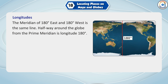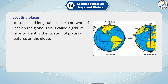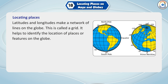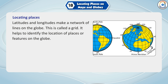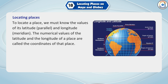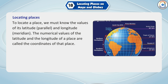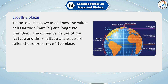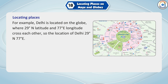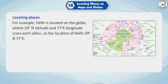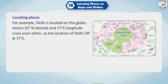Halfway around the globe from the prime meridian is longitude 180 degrees. Latitudes and longitudes make a network of lines on the globe called a grid, which helps to identify the location of places or features. To locate a place, we must know the values of its latitude (parallel) and longitude (meridian). The numerical values of the latitude and longitude of a place are called the coordinates of that place. For example, Delhi is located where 29 degrees north latitude and 77 degrees east longitude cross each other.